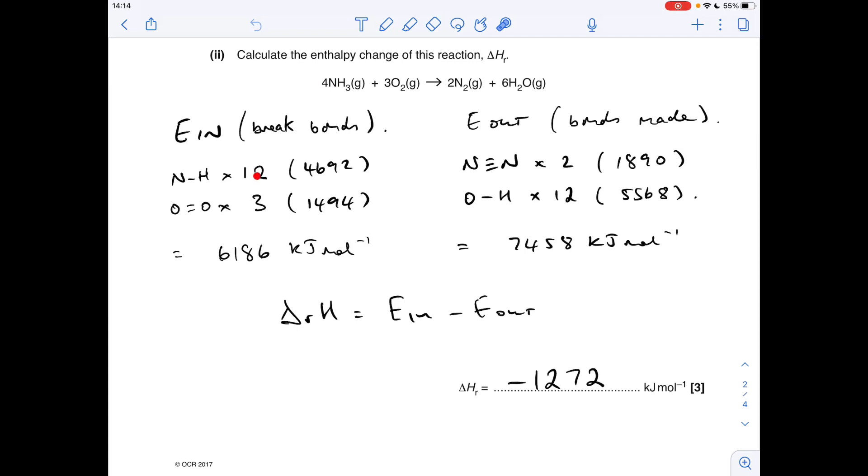So in four moles we'd have 12, so we multiply the average enthalpy change for the NH bond by 12, and we get that value there. Three moles of O2 is effectively breaking three O=O double bonds, 1494. So the sum of those is 6186.